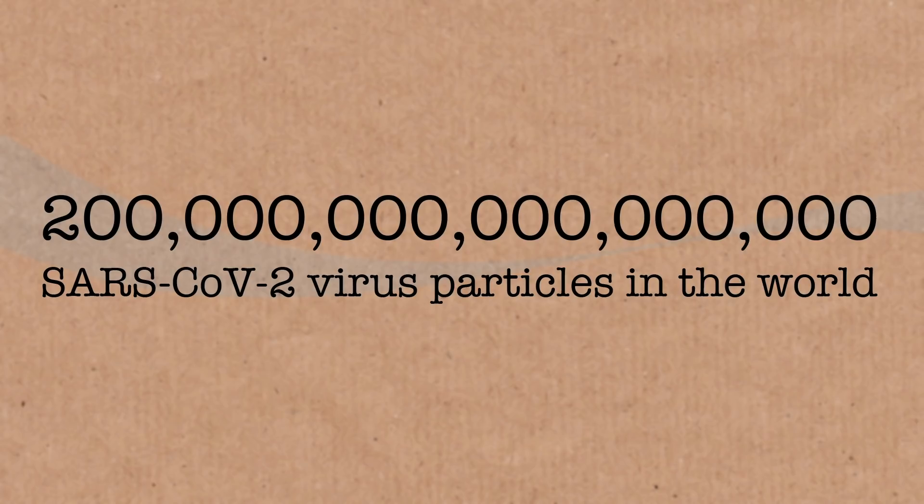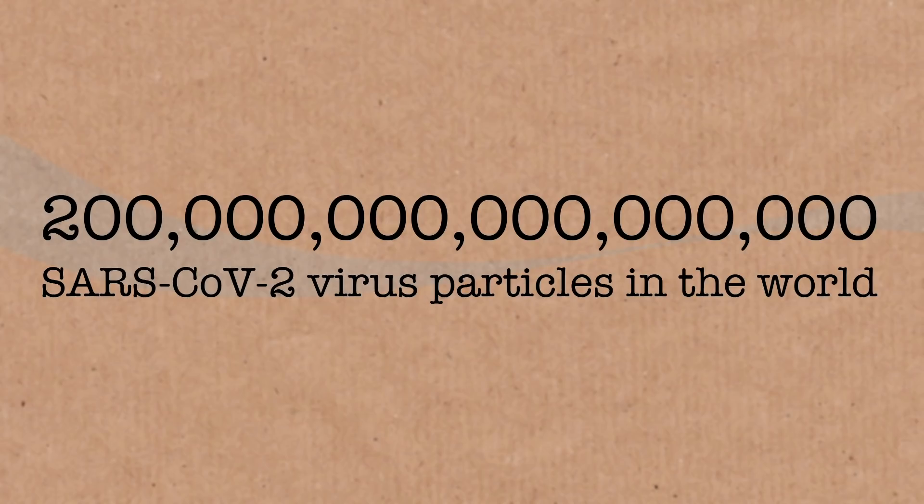That number of grains of sand is also a Fermi estimate, so neither figure is exact. For the calculation I used the middle of the peak viral load distribution — 10 billion particles — which is the geometric average (multiply a billion and 100 billion together and take the square root), not the arithmetic average of about 50 billion. There are already two orders of magnitude of uncertainty in that estimate, so you could argue it's 10 times bigger or 10 times smaller. But in the middle of that range is around 200 quadrillion virus particles.